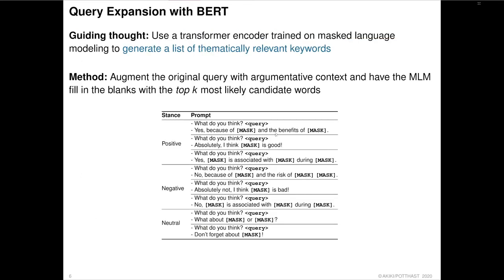The second approach — the one that tied with the baseline — uses query expansion with BERT. In this case it doesn't have to be BERT specifically; it can be any transformer encoder pre-trained on masked language modeling. We use BERT to generate a list of thematically relevant keywords, and it's this list that we substitute for the original query to see whether we can perform at least as well. Remember that BERT is a transformer encoder — it's not causal — so every token in the sentence can attend to every other token. You can't use it to auto-regressively generate sentences, but you can ask it to fill in the blank.